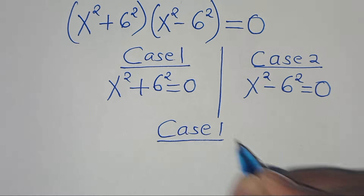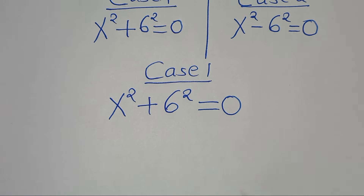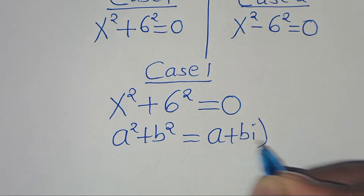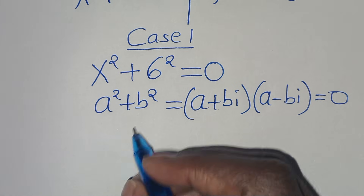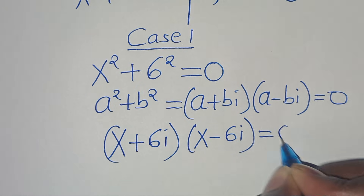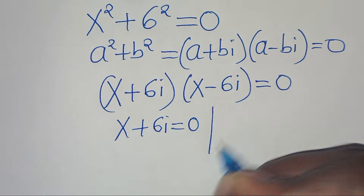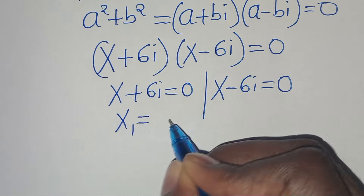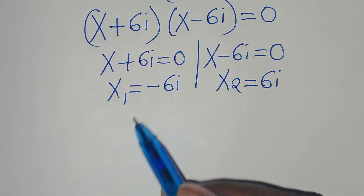Let's start with Case 1. We have x to the power of 2 plus 6 to the power of 2 equals 0. This equation is of the form a squared plus b squared, which we can express as a plus bi multiplied by a minus bi, equals 0. So here we have x plus 6i multiplied by x minus 6i equals 0. This gives us x plus 6i equals 0, so x₁ equals negative 6i, and x minus 6i equals 0, so x₂ equals 6i.